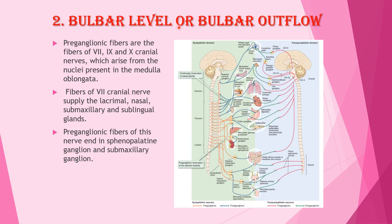In the bulbar level or bulbar outflow, preganglionic fibers are the fibers of the 7th, 9th, and 10th cranial nerves, which arise from nuclei present in the medulla oblongata. Fibers of the 7th cranial nerve supply the lacrimal, nasal, submaxillary, and sublingual glands. Preganglionic fibers of these nerves end in the sphenopalatine ganglion and the submandibular ganglion.